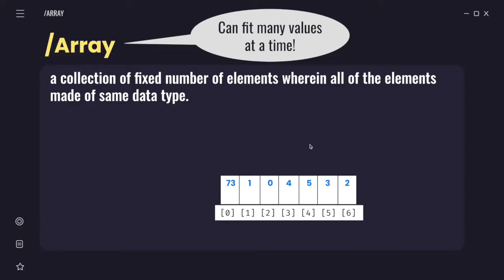So basically, array is a collection of a fixed number of elements wherein all of the elements are made of the same data type. So the array can actually fit many values at one time. This is the formal definition of array. Bayangkan kita ada satu tempat where we can store all these elements, and these elements must be of the same data type. If you look at the blue values here - 73, 1, 0, 4 - these are all made of data type integer.